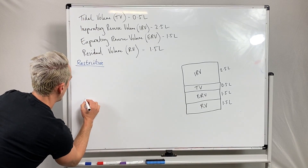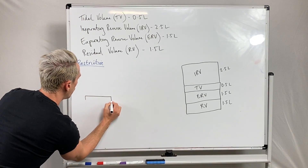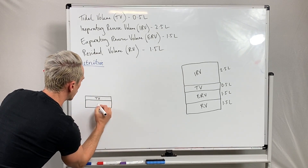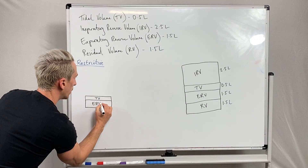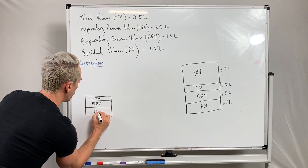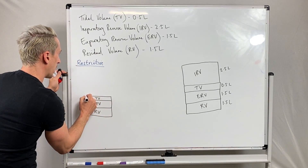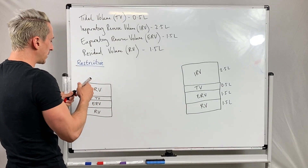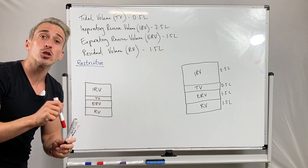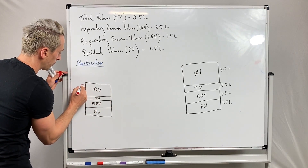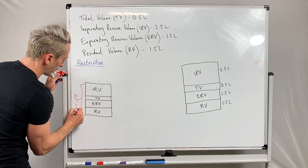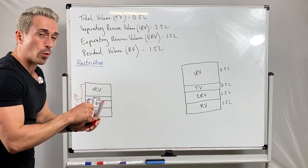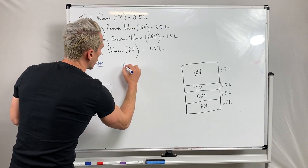In a restrictive disorder, we draw a small tidal volume, a small expiratory reserve volume, a small residual volume, and a small inspiratory reserve volume. All the volumes are reduced, which also means the total lung capacity — the TLC — is reduced as well. So that's a restrictive respiratory disorder.